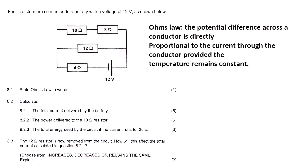The potential difference across a conductor is directly proportional to the current through the conductor, provided the temperature remains constant. That comes from the formula V = I × R. So we can see that the potential difference, which is voltage, is directly proportional to the current, and just make sure that the temperature is constant.